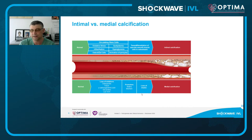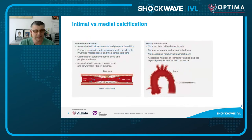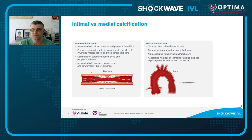Loss of functioning elastin has also been described as related to medial calcification. Intimal calcification is associated with atherosclerosis and plaque vulnerability, forms in association with vascular smooth muscle cells, macrophages, and the necrotic core, and is common in coronary arteries, aorta, and peripheral arteries — associated with luminal encroachment and downstream ischemia. Medial calcification is not associated with atherosclerosis, more common in the aorta and peripheral arteries, not associated with luminal encroachment in early stages, and associated with loss of damping function, rise in pulse pressure, and indirect ischemia.